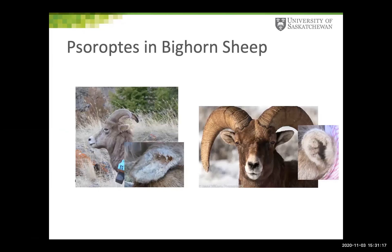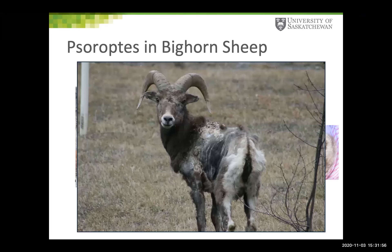Moving forward — Sarcoptes and bighorn sheep. For anyone familiar with sheep scab, Sarcoptes causes a nasty generalized mange in domestic sheep, but in bighorn sheep, like rabbits, it tends to localize to the ears. The animal you can see is a typically affected bighorn sheep in the Okanagan area. In some cases it can get quite nasty — this particular animal was the index case where the parasite was confirmed in the Okanagan region. This ram was later euthanized in Olalla, and the post-mortem exam confirmed the presence of Sarcoptes in that population.